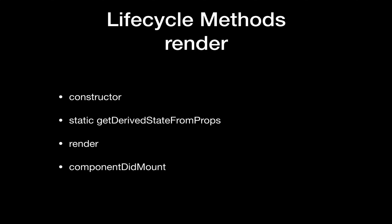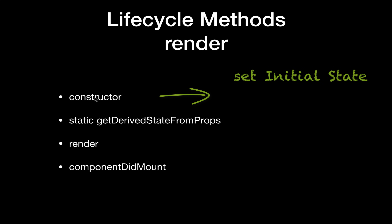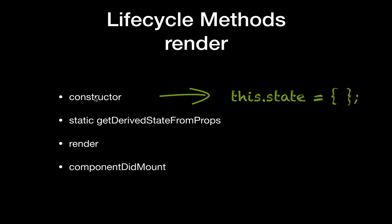There are two phases when you render a component: the initial render and re-render, and they have different lifecycle methods. The first lifecycle method that runs during initial render is the constructor, which runs only once. The job of the constructor is to set the initial state — this is the only place where you can use `this.state` directly. After this, you have to use `this.setState` if you want to change the state.